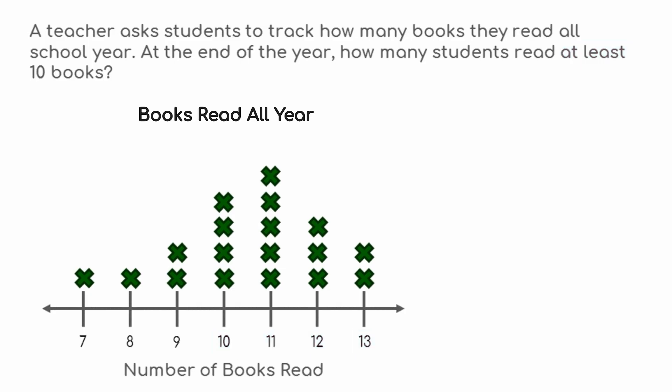Each X represents one student. Four students read 10 books, five students read 11 books, three students read 12 books, and two students read 13 books. There are 14 X's, so 14 students read at least 10 books all school year.